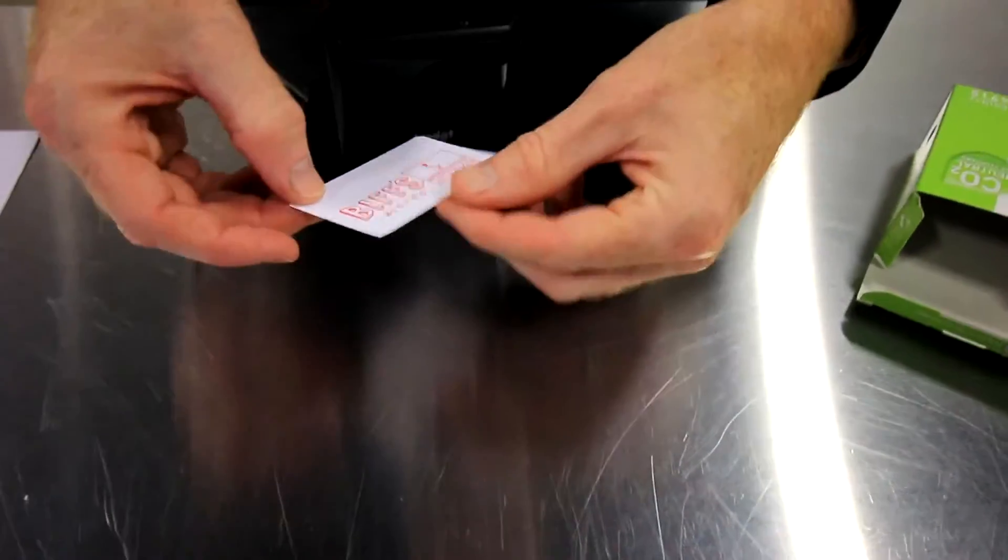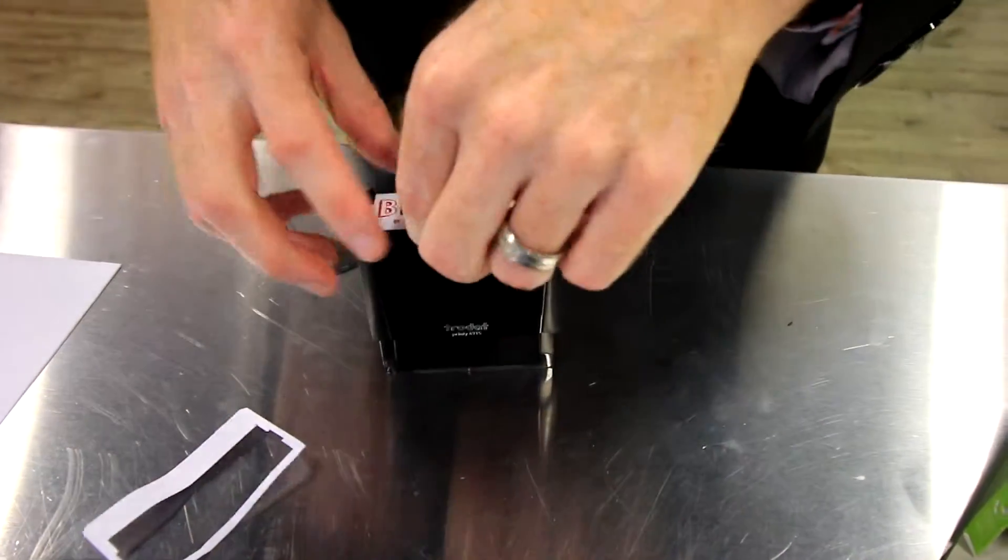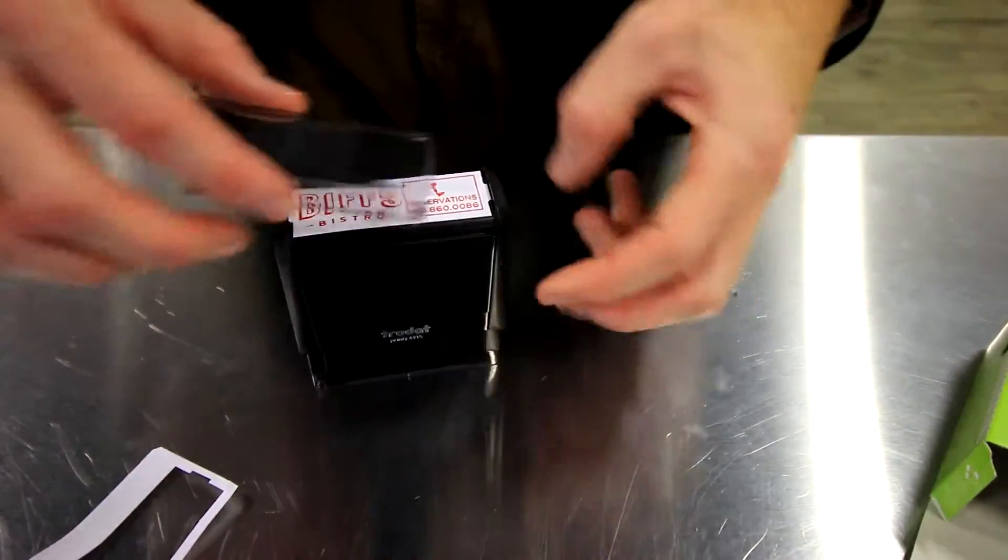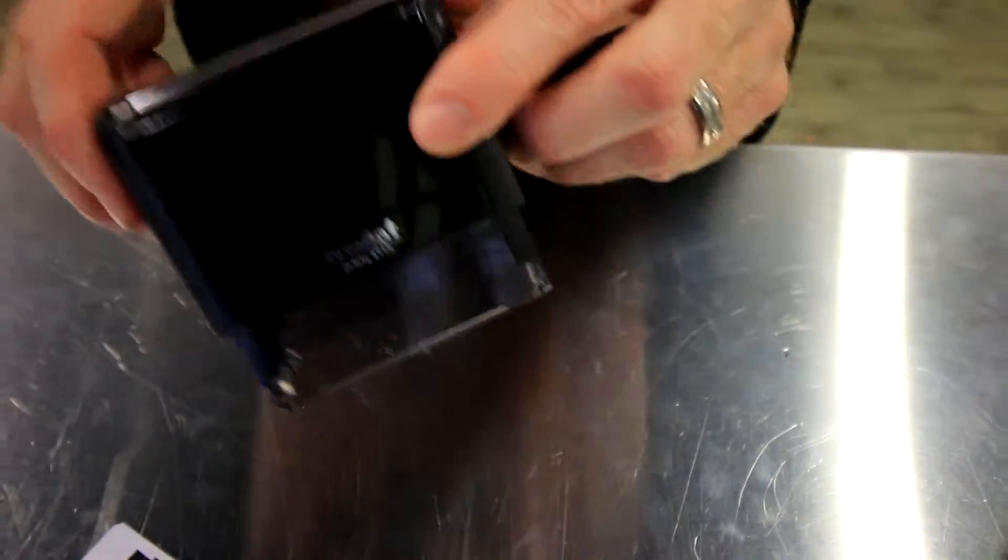Now simply take it out of the perforations, put it on top and then attach the clear window. Your stamp is done.